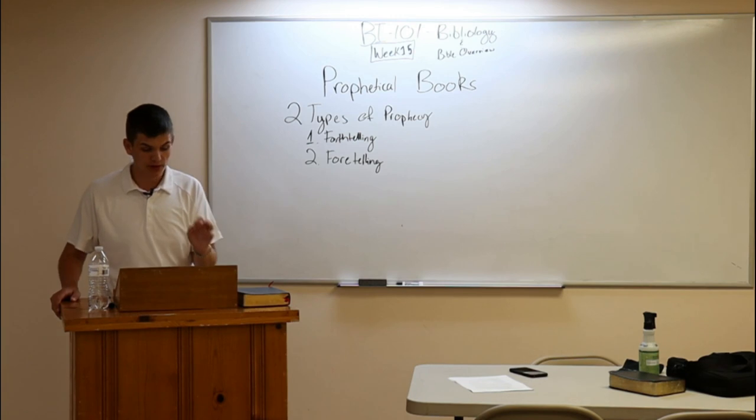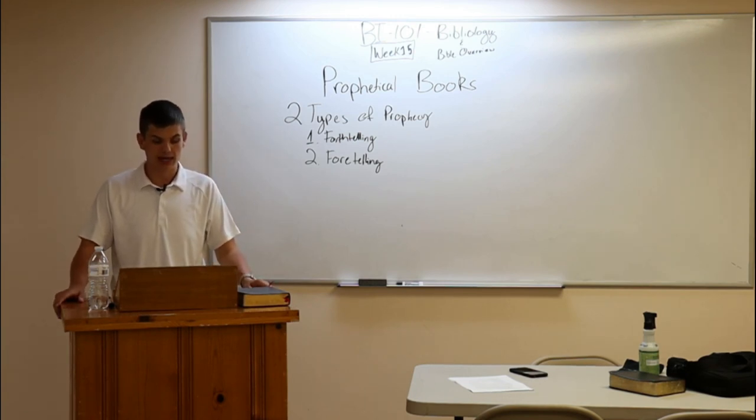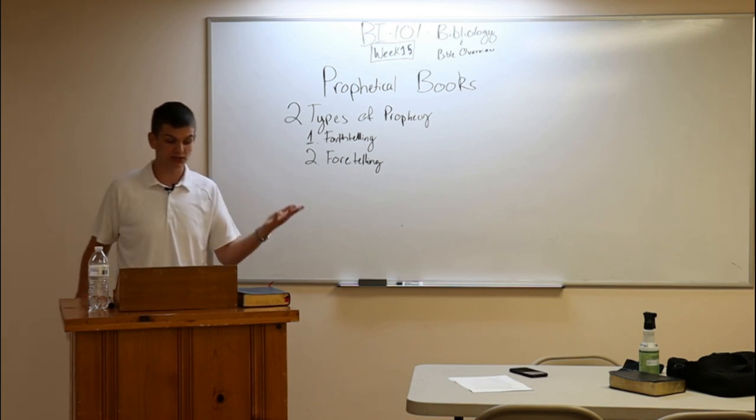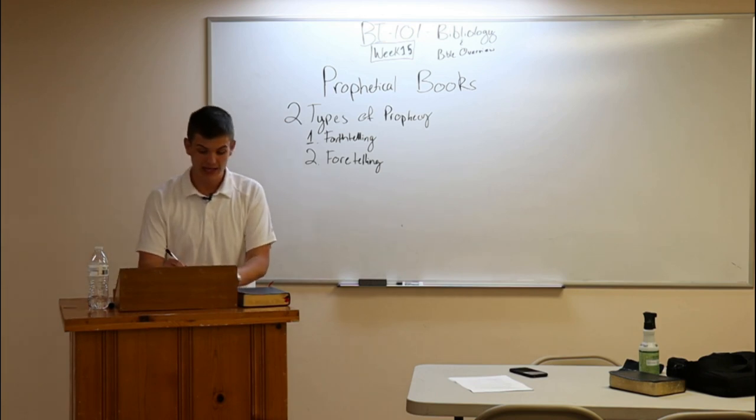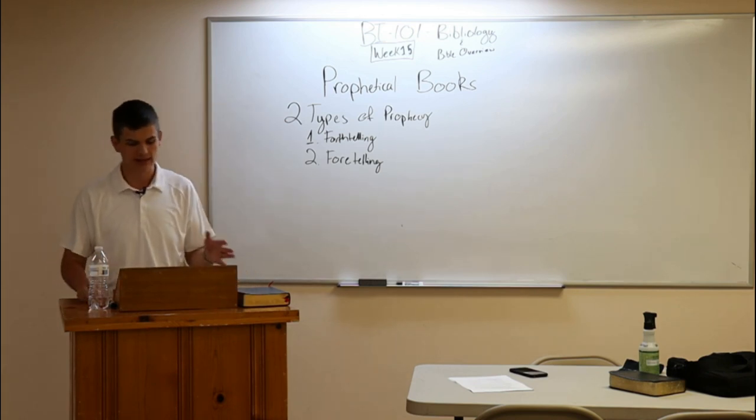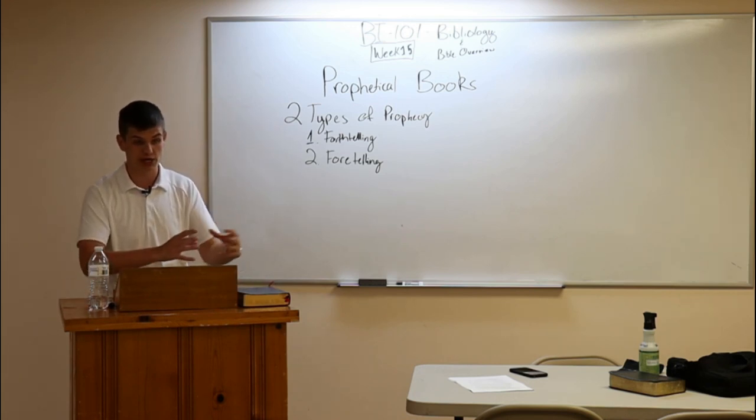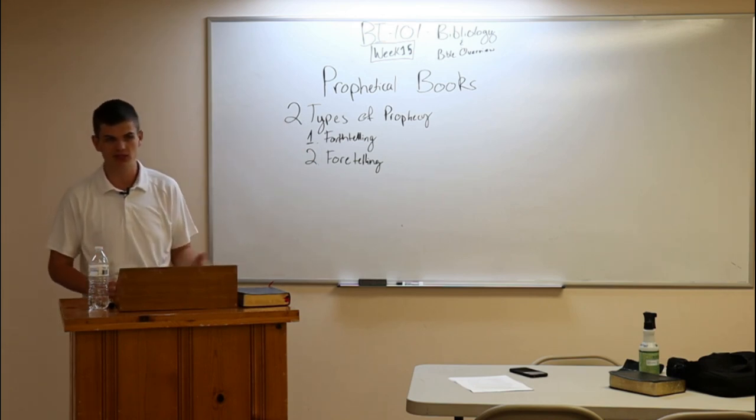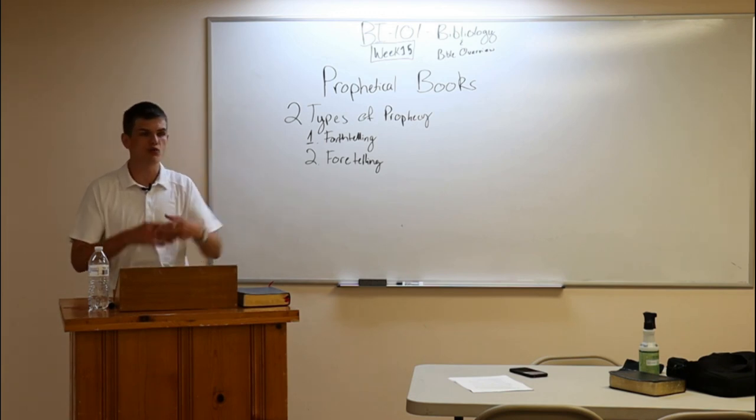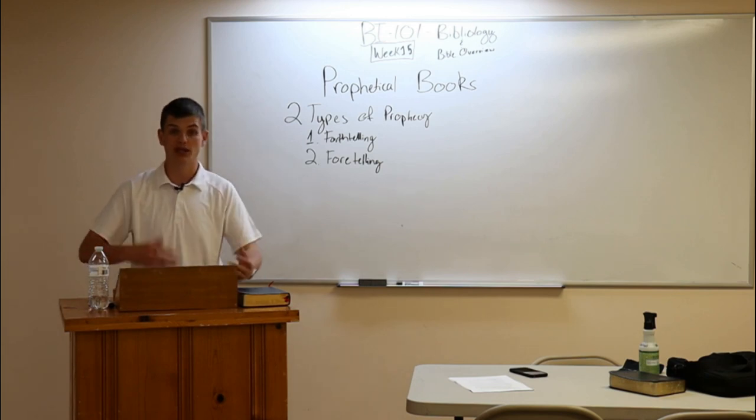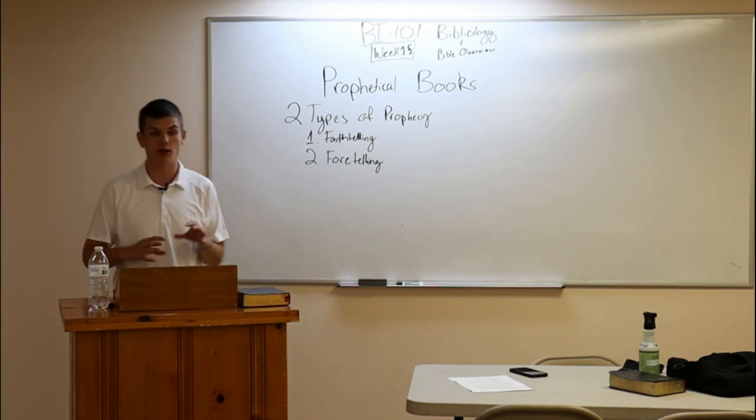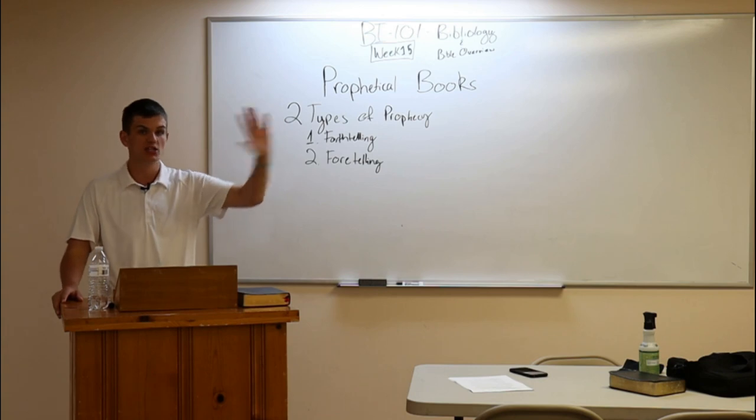We need to understand the 17 books referred to as the prophetical books are known as the writing prophets. Remember just how we said that the poetical books, there was poetry in other portions of scripture, but yet these books that were poetical are characterized as such. Well, it's the same in the prophetical books. Elijah, for instance, was a prophet, but he was not a writing prophet in the sense that he does not have a book in the canon of scripture named after him.